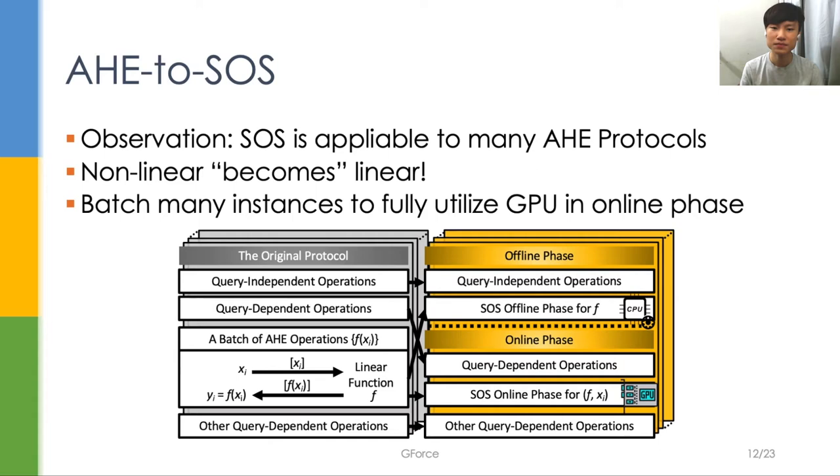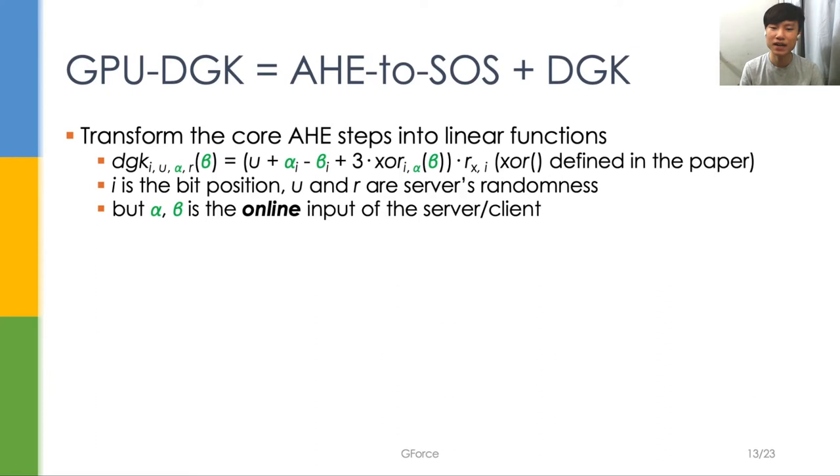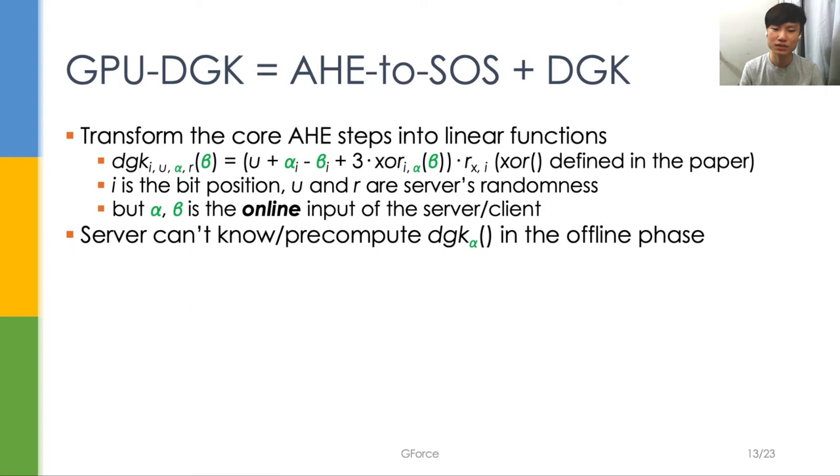We now apply AHE to SOS to get a GPU-friendly version of DGK protocol. We first transform the core AHE step of DGK into a linear function, parameterized by i, U, alpha, and R, which in turn calls a linear version of SOS. To pre-compute the offline share, the server can know U and R because they are derived by randomness. However, the original DGK protocol assumes alpha is an online input.